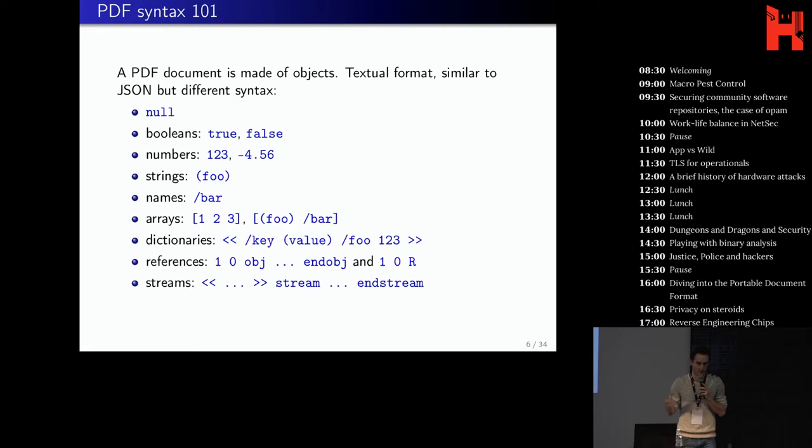So you can think of it as JSON but just with a slightly different syntax. You have a null object, booleans, numbers, strings but it's written with parenthesis. You have names which are sort of keywords. You have arrays that can contain arbitrary objects. Dictionaries that map names to other objects. And then you have higher level constructions such as references so you can give a number to an object and then refer to this object from other objects. So it works like a pointer. And also there are streams that associate a dictionary with the binary blob. So it can be useful for example for images where the binary blob is the image and the dictionary will specify the file dimensions.